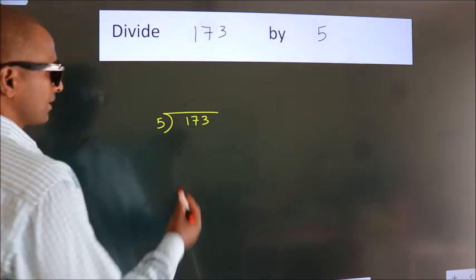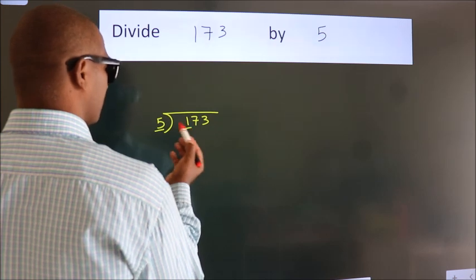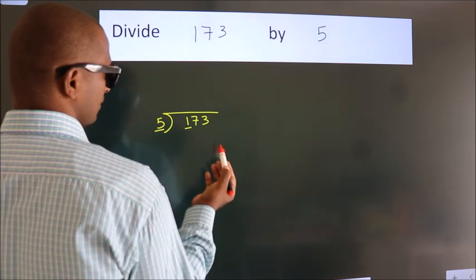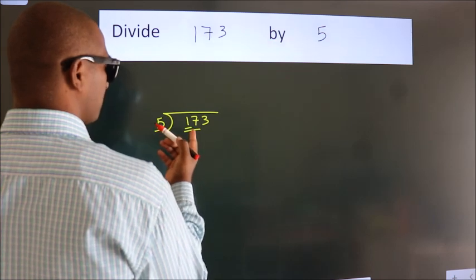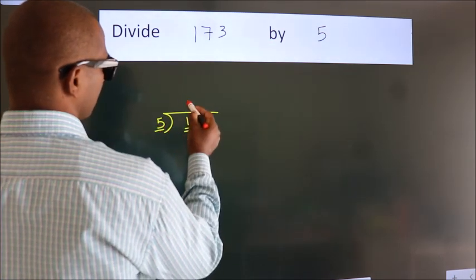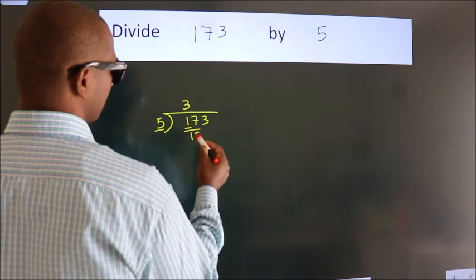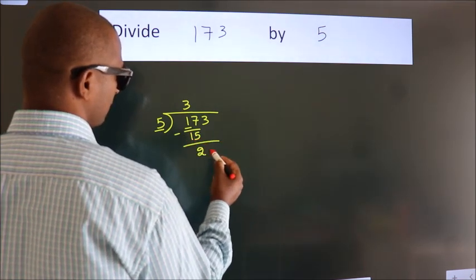Next, here we have 1, here 5. 1 is smaller than 5, so we should take 2 numbers, 17. A number close to 17 in the 5 table is 5 threes, 15. Now we should subtract. We get 2.